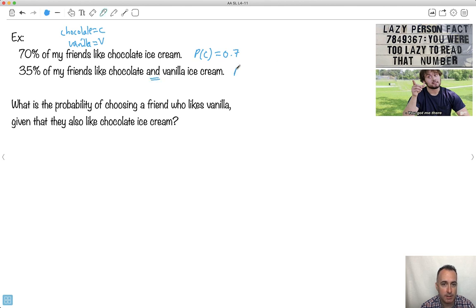What is this? 35% of my friends like chocolate and vanilla. What does this mean? Probability of chocolate and vanilla. Remember, that's a symbol for and. It looks like a little A, except you remove that little stick there. So probability of chocolate and vanilla, that equals 0.35. Do you see what I've done? I've decoded this piece, because this is what I need for the equations.